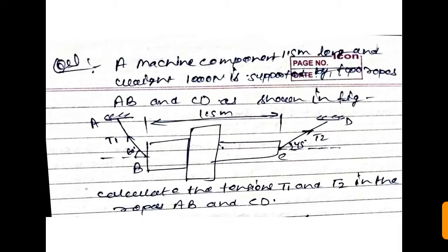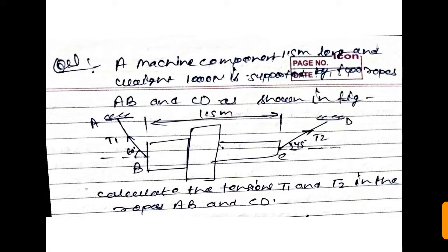Now let's look at a question: a machine component 1.5 meters long with a weight of 1000 Newtons is supported by two ropes AB and CD as shown in the figure. We have to calculate the tensions T1 and T2 in ropes AB and CD.